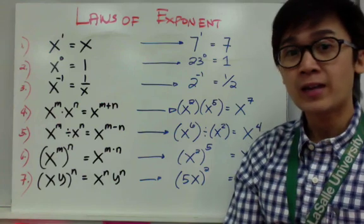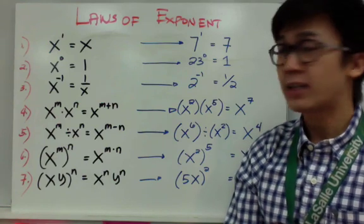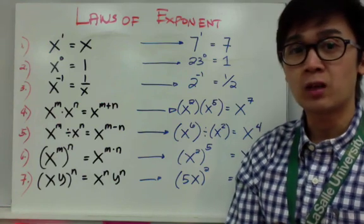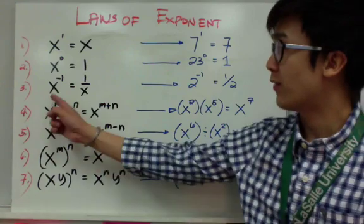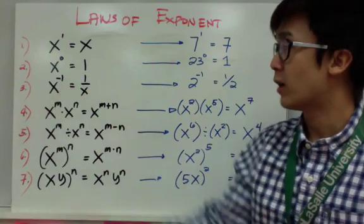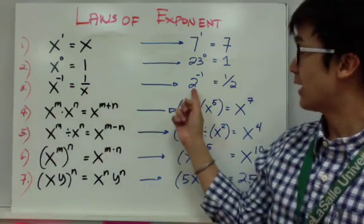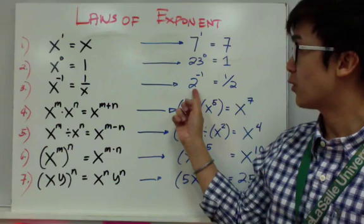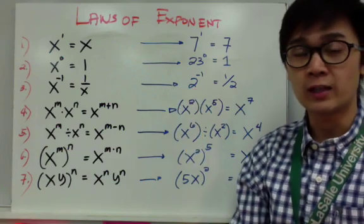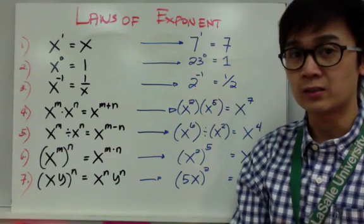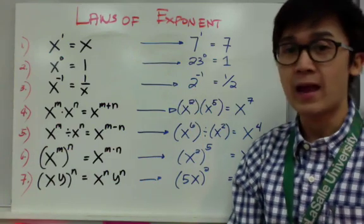If you have a negative exponent, you are just taking the reciprocal of your expression. So if you have x to the negative 1, it is simply 1 over x. In our example, if you have 2 raised to negative 1, it will be changed into 1 over 2, or one half.